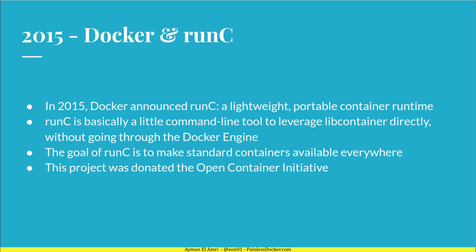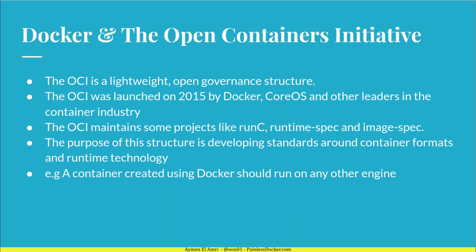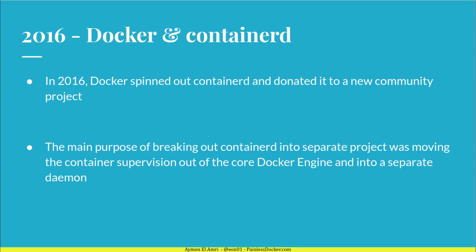Runc was later donated to the Open Container Initiative, the OCI. The OCI is a lightweight open governance structure that was launched by Docker, CoreOS, and other leaders in the container industry in 2015. It maintains projects like runc and the runtime and image specifications. Its purpose is developing standards around the container industry, so if you create a container using Docker, you can run it on any other engine. In 2016, Docker spun out containerd and donated it to a new community project.